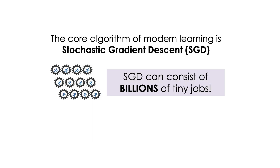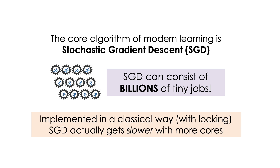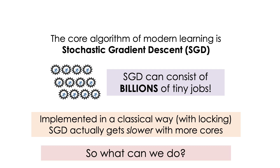In our problem, Stochastic Gradient Descent, or SGD, consisted of billions of tiny little jobs. As a result, implementing it in a classical way led to a situation in which SGD actually gets slower with more cores. So what could we do? We tried many things, but bluntly, we were pretty frustrated.